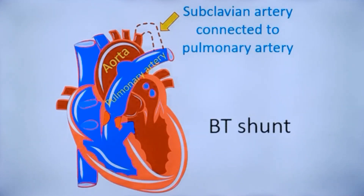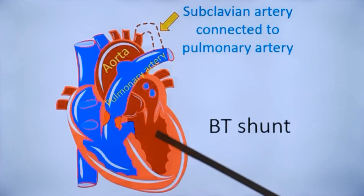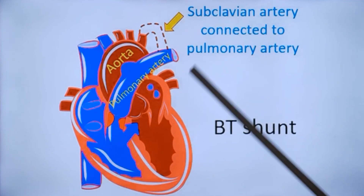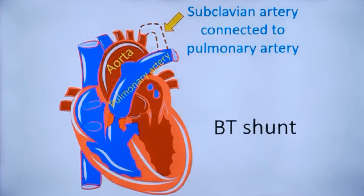The classic BT shunt was performed earlier but is no longer being done. It was usually performed on the side opposite the aortic arch. The presence of the brachiocephalic trunk on that side prevents kinking of the subclavian when it is pulled down towards the pulmonary artery, which was the reason for doing it on the side opposite the aortic arch.